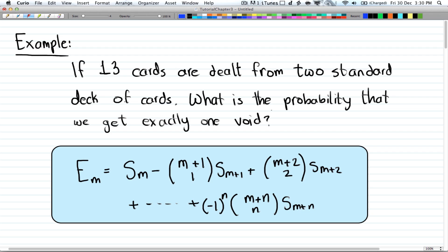Alright, so let's take a look at our example. And here if 13 cards are dealt from 2 standard decks of cards, what is the probability that we get exactly 1 void? So a void is not getting a whole suit. So let's say you have 13 cards and you have no diamonds.